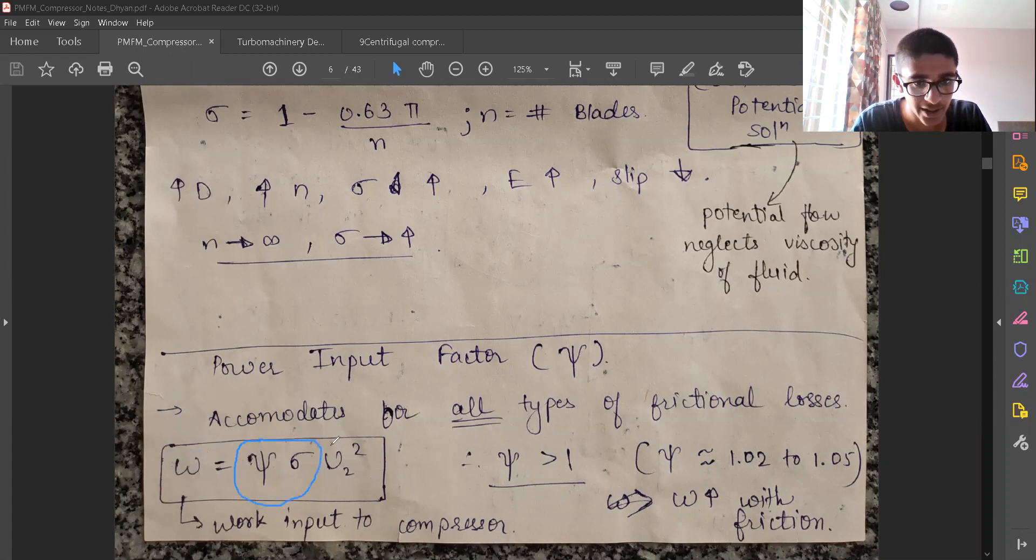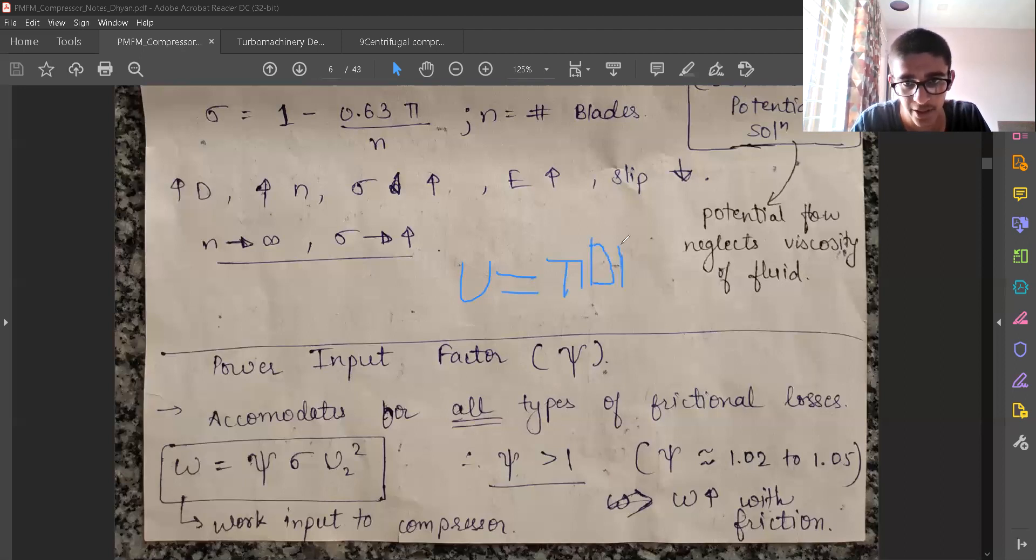How do we get the blade velocity? There are two ways. One using the velocity triangles, which we know they will look like some triangles and using trigonometric relations, we'll figure out the velocity or u is given by pi d n by 60. That n was in rpm. This work on actual work that is going to increase with friction.